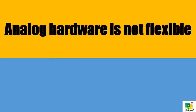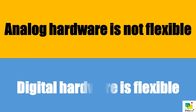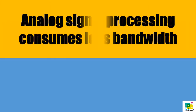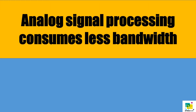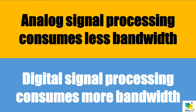Analog hardware is not flexible, and digital hardware is flexible. Analog signal processing consumes less bandwidth, and digital signal processing consumes more bandwidth.